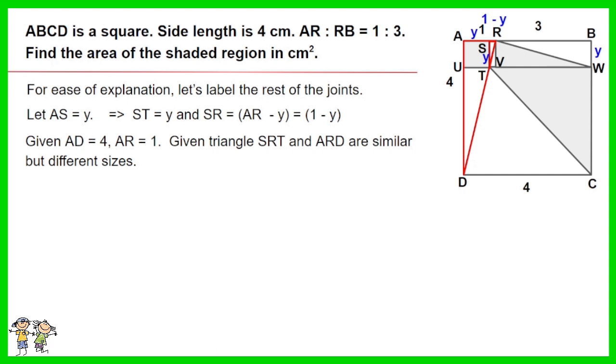Given triangle SRT and ARD are similar but different sizes. Thus ratios of SR to AR equals ST to AD. As such 1 minus Y equals Y over 4. Work out the equation. You have Y equals 4 over 7.